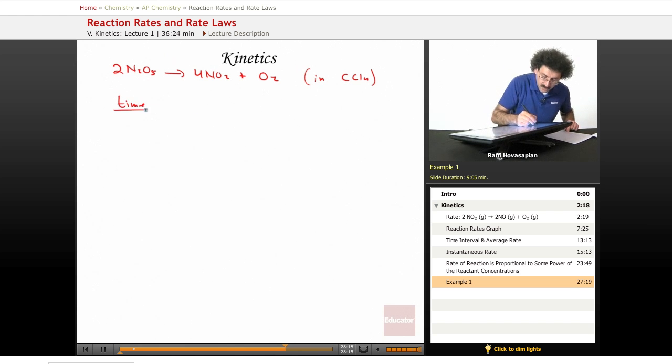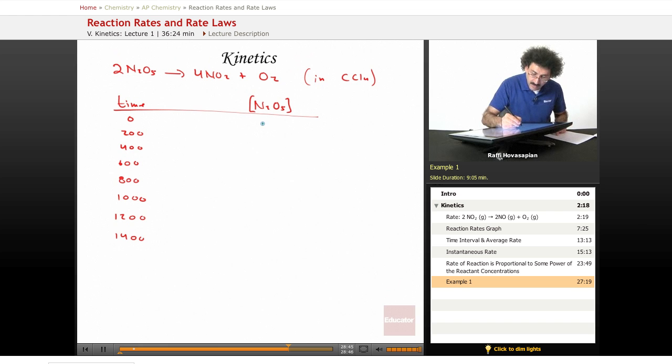So now we have some time measurements and we have some concentration measurements for N2O5. So 0, 200, 400, 600, 800, 1,000, 1,200, 1,400 seconds. We have 1.00, 0.88, 0.78, 0.69, 0.61, 0.54, 0.48, 0.43 molar.